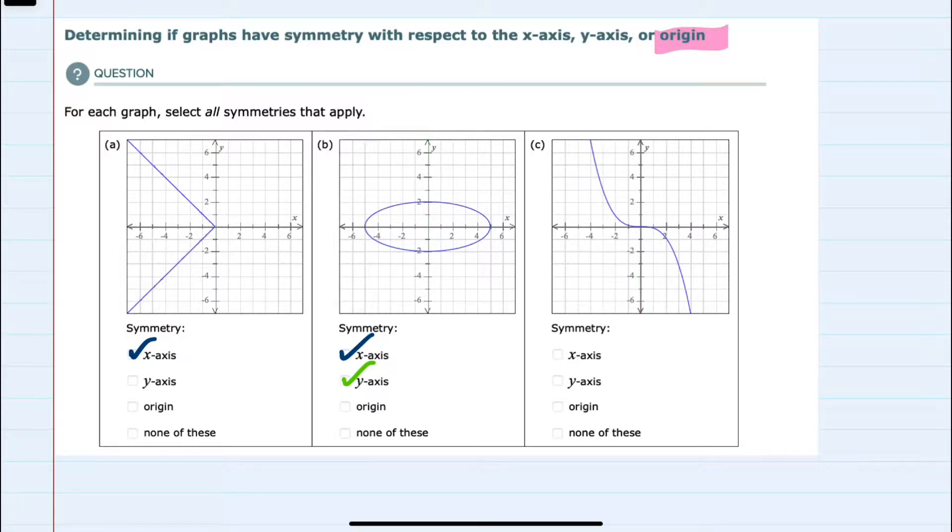The origin being 0,0 would mean that every point on the line has a mirror image across the origin. So a point here on the first one would have to have a mirror image across the origin. Over here, it does not, so no origin symmetry.